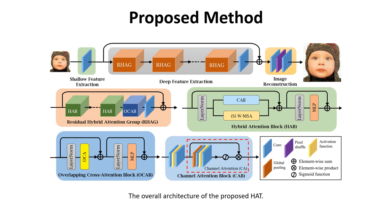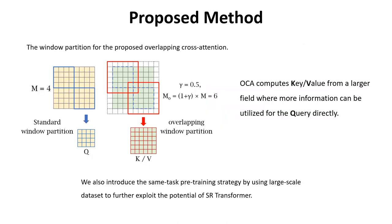For the overlapping cross-attention block, it is similar to the standard self-attention block but uses our proposed overlapping cross-attention. The window partition for the proposed overlapping cross-attention is shown here. Key and value are computed based on the overlapping window partition, so the module can utilize cross-window information directly.